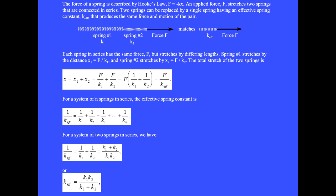Each spring in series has the same force F but stretches by differing lengths. Spring number one stretches by the distance x1 equals f over k1, and spring number two stretches by x2 equals f over k2. The total stretch of the two springs is x equals x1 plus x2 equals f over k1 plus f over k2.